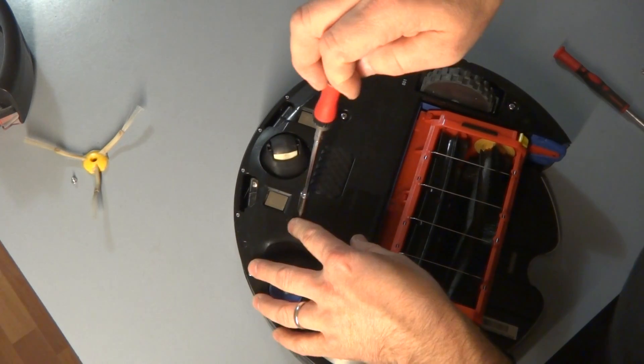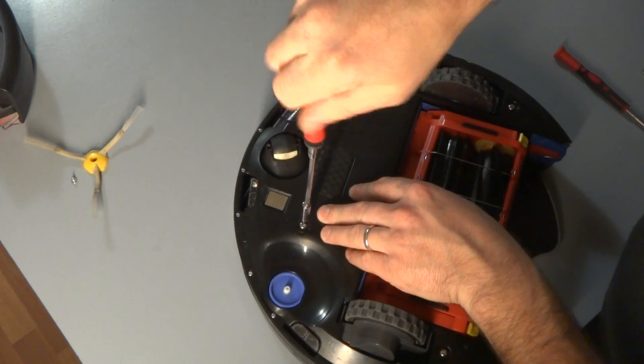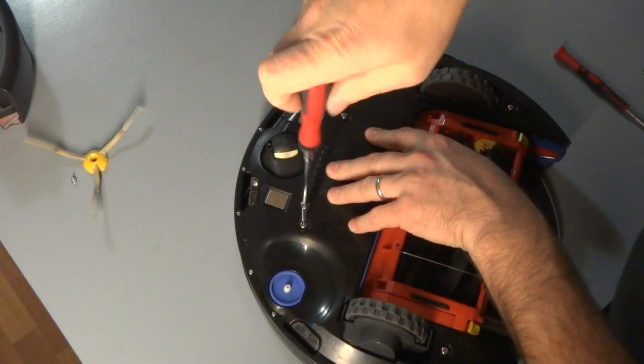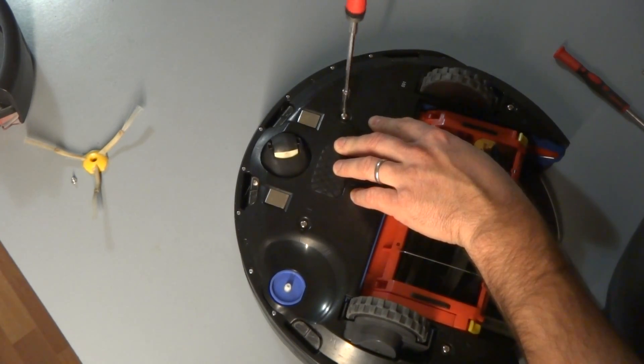You get a screwdriver with a number 2 size Phillips head. And you go ahead and screw forward these bigger screws that are on the bottom plate here.